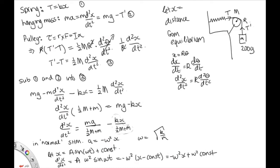So this tells us that our constant, this term here, is equal to mg over one half big M plus little m. And here our omega squared is the k over half big M plus little m.